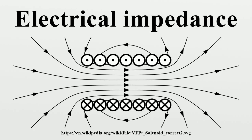Inductive reactance is proportional to the signal frequency and the inductance. An inductor consists of a coiled conductor. Faraday's law of electromagnetic induction gives the back EMF due to a rate of change of magnetic flux density through a current loop. The back EMF is the source of the opposition to current flow. A constant direct current has a zero rate of change and sees an inductor as a short circuit. An alternating current has a time-averaged rate of change proportional to frequency, causing the increase in inductive reactance with frequency. The total reactance is the sum of capacitive and inductive reactances, giving the total impedance.